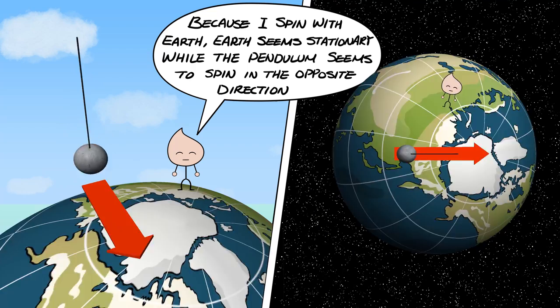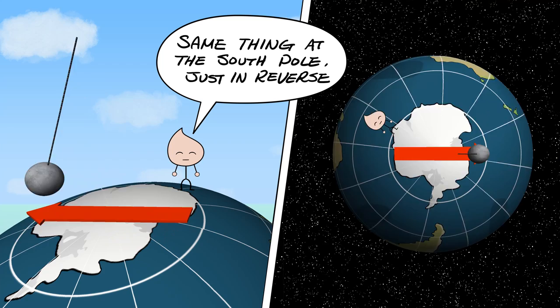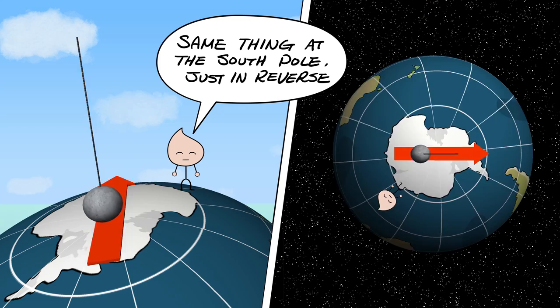So from over the south pole, Earth spins clockwise while the pendulum remains fixed. But if you're standing on the surface, it's the pendulum that spins, specifically counterclockwise.